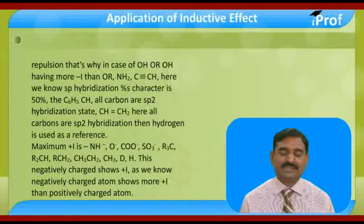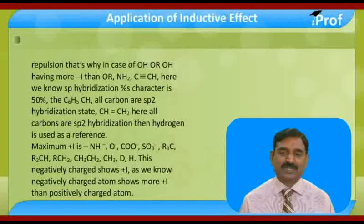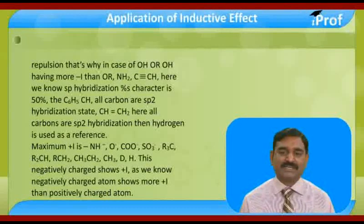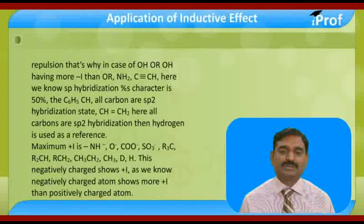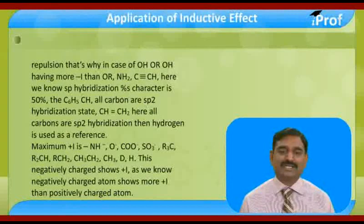Then C≡CH — here we know SP hybridization, percentage s-character is 50%. Then C6H5 (phenyl) — all carbons are SP2 hybridized. Then CH=CH2 — all carbons are SP2 hybridized. Then hydrogen is used as a reference. The total sequence is now repeated.